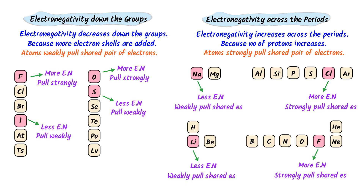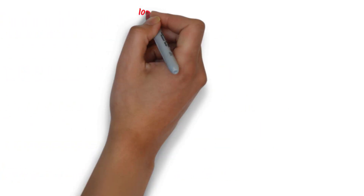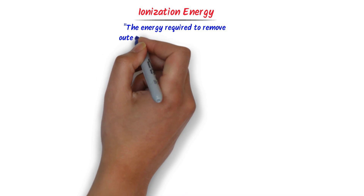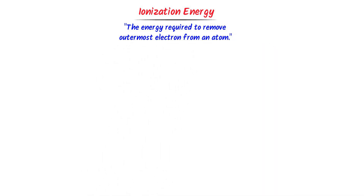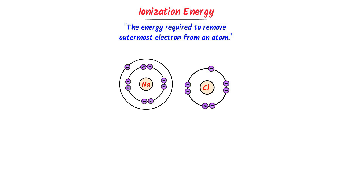Now we will learn the trends of ionization energy in the periodic table. We define ionization energy as the energy required to remove the outermost electron from an atom. For example, consider sodium and chlorine. It is very easy to remove an electron from sodium, so sodium has smaller ionization energy. On the other hand, it is very difficult to remove an electron from chlorine, so chlorine has higher ionization energy.